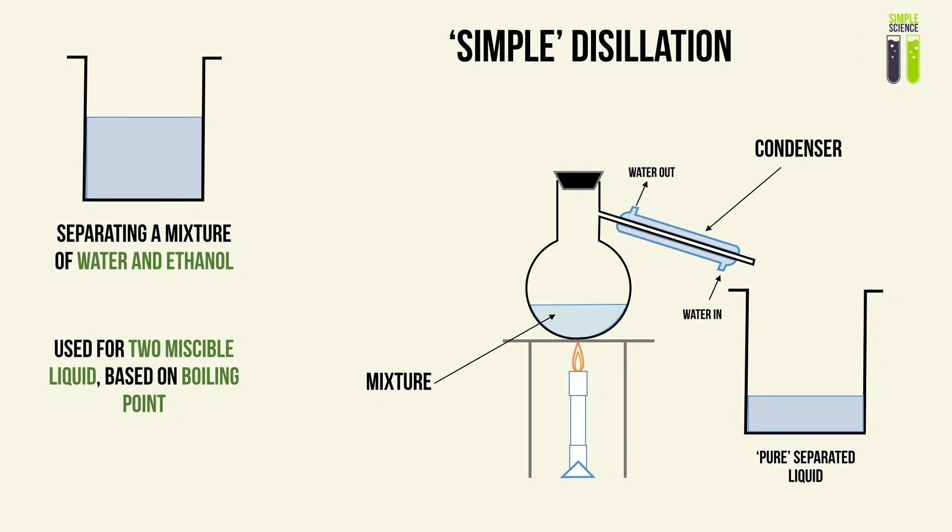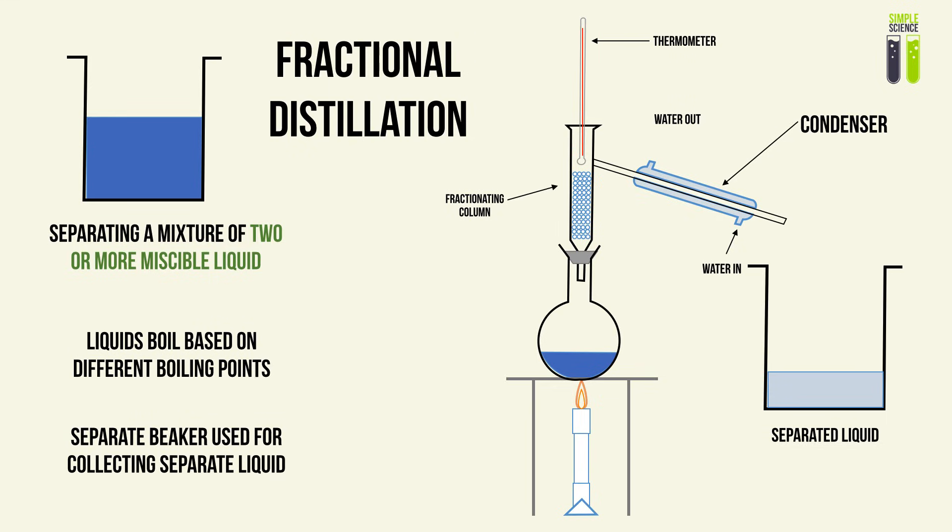When we need to separate a mixture of not just two miscible liquids but three or more — such as a mixture of hydrocarbons — we use a method called fractional distillation. How is it different from simple distillation? We use a fractionating column, which when coupled with a thermometer allows for a more accurate temperature environment. This accuracy is needed because the differences in boiling points of the liquids within the mixture are very small.